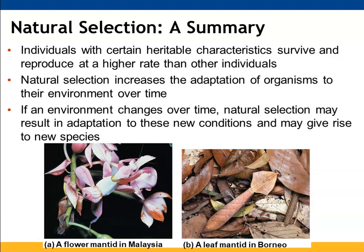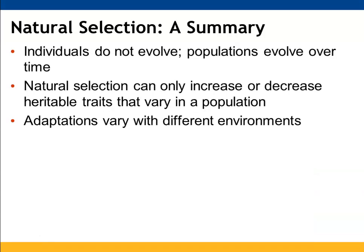Individuals with heritable characteristics that are more favorable are going to survive and reproduce over time. As the environment changes, organisms adapt, and those with more favorable traits will survive, reproduce, and pass on those traits. If there is enough change in those traits, speciation may occur and a new species can form. It is not individuals who are evolving — it is the population that is evolving. Natural selection results in changes in the frequencies of desirable traits, and environmental changes lead to adaptations.